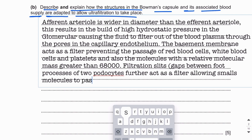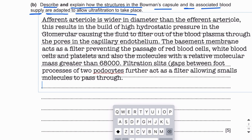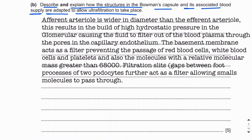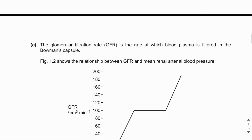So the glomerulus, the Bowman's capsule, and the afferent and efferent arterioles are all adapted for ultrafiltration. Let's move on to the next part.